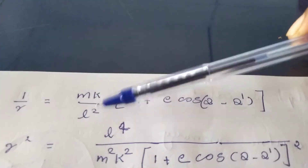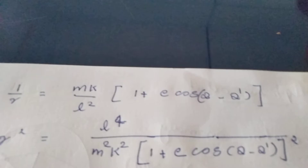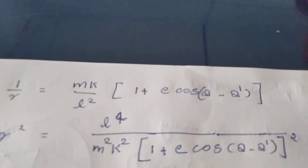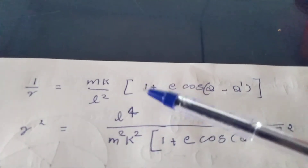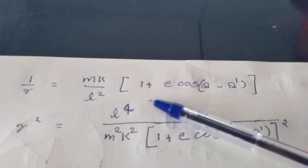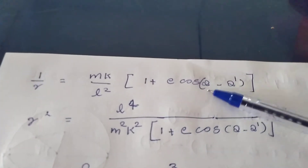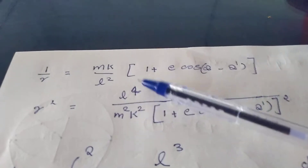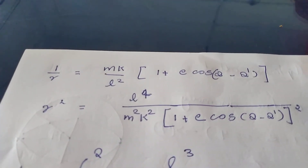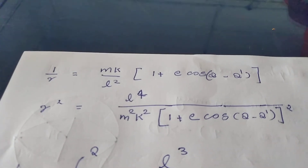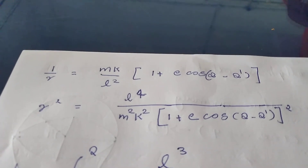From the previous equation, 1 by r equals mk by L squared times (1 plus e cosine of theta minus theta dash). This gives r squared equal to L squared by mk divided by (1 plus e cosine of theta minus theta dash), all squared. So r squared equals L to the 4th divided by m squared k squared times (1 plus e cosine of theta minus theta dash) squared.